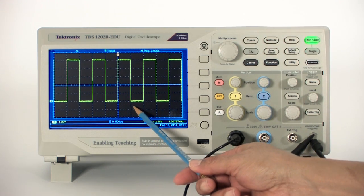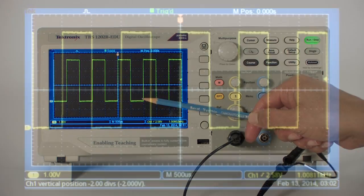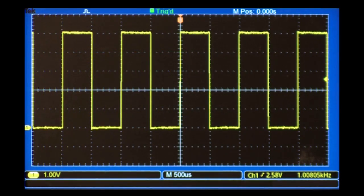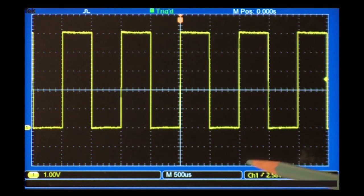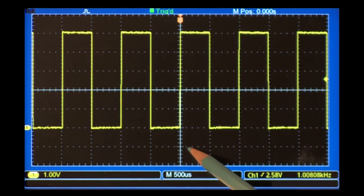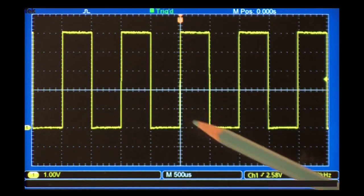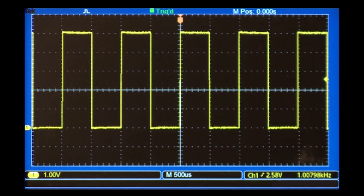You can quickly check timing relationships and voltage values just by looking at the screen. Based on the scale settings, each horizontal division represents 500 microseconds, and each vertical division represents 1 volt. Since the period of our signal is 2 divisions long, we can multiply 2 by 500 microseconds to get a period of 1 millisecond. The signal is also 5 divisions high, so we can multiply 5 times 1 volt to get the amplitude of 5 volts.